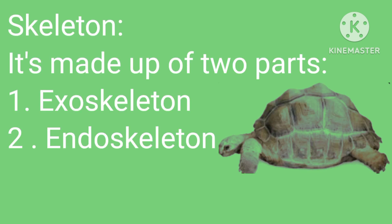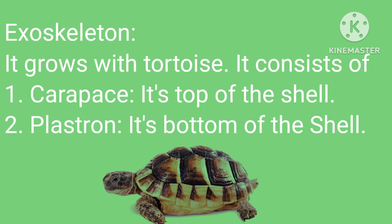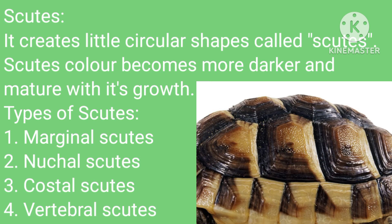Skeleton: it is made up of two parts — exoskeleton and endoskeleton. Exoskeleton: it grows with the tortoise. It consists of the carapace, which is the top of the shell, and the plastron, which is the bottom of the shell. Scutes create little circular shapes; their color becomes darker and more defined with growth.